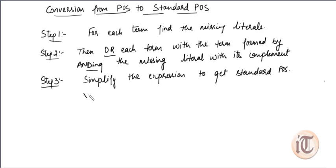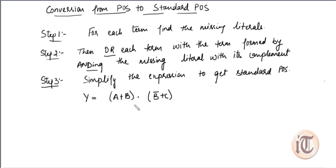The example is that we have to convert this POS into standard POS: Y equals (A + B)(B̄ + C). This is a POS form — each factor is a sum term and we take the product of the sum terms. But is this a standard POS form? No, because the total literals are A, B, C — three literals — but in each term one literal is missing, so this is not a standard POS.